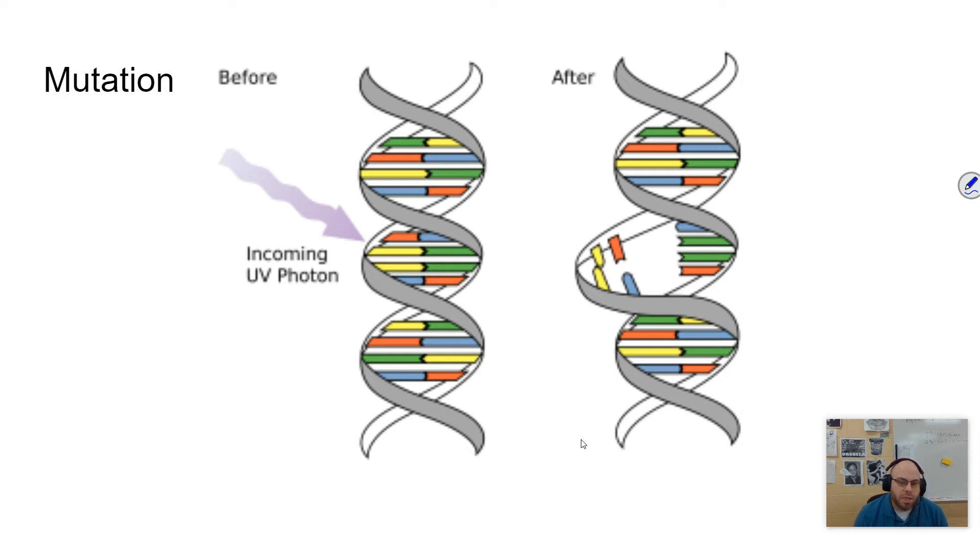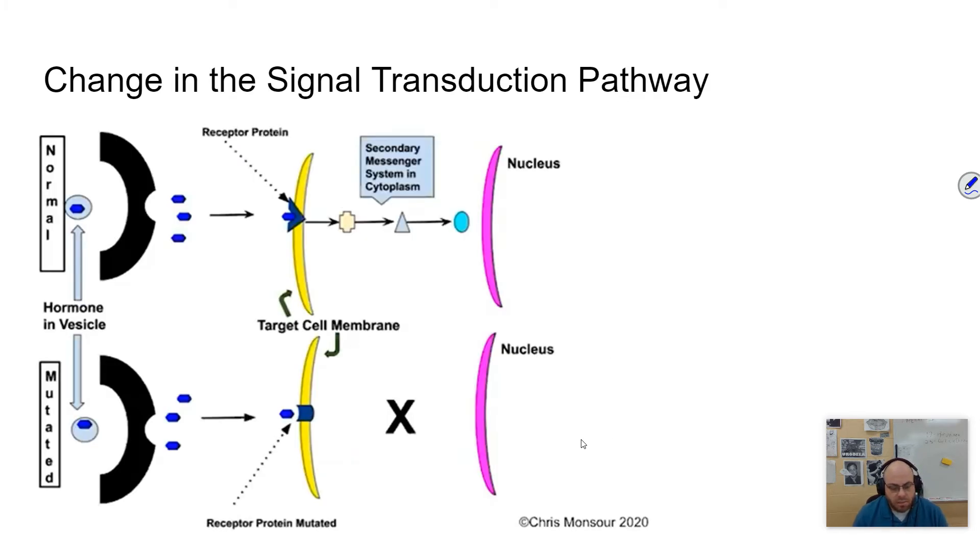So if you change the protein, you change the function or you break the function. It's like if you have a pair of scissors and you just take one of the blades off, that scissors is no longer scissors and it can't function anymore. Or if you put a hole in the bottom of a cup, it just doesn't work anymore. So you've changed the shape, you've also altered the function or completely destroyed the function. And so we'll see how that affects the signal transduction pathway.